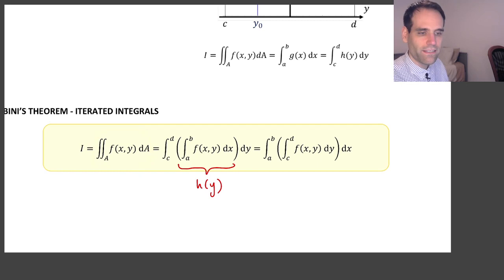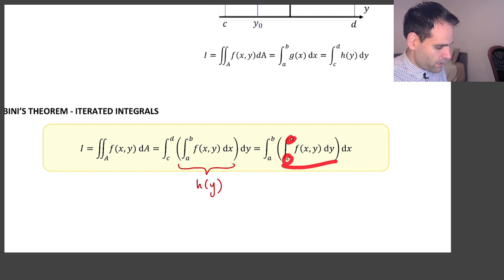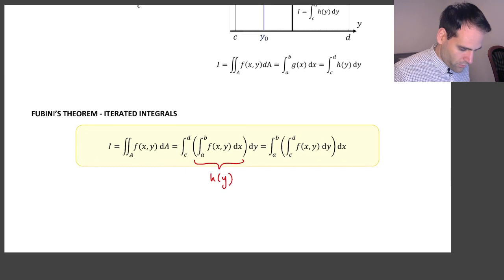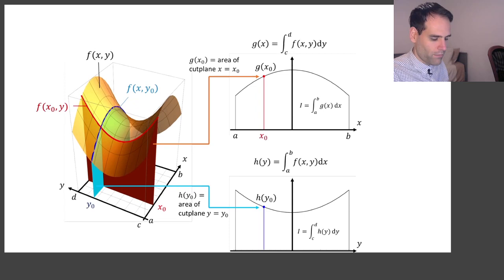In other words, a double integral is just an integral inside of an integral. The order in which you do the integrals — first x between a and b then y between c and d, or first y between c and d then x between a and b — doesn't matter. This is true for rectangular areas. Later we will see what happens when the area is not rectangular, and then it becomes much trickier, but for rectangular areas the concept is very simple.